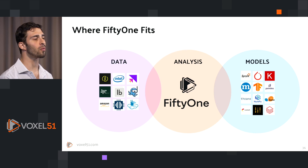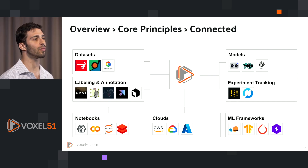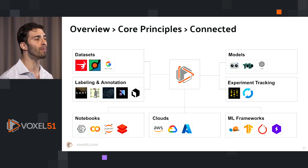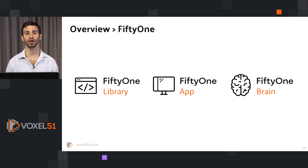Let's take a step back and talk about how FiftyOne fits into the larger data science, machine learning, and computer vision space. FiftyOne sits at the intersection of data and models — it helps you build higher quality datasets so that you can train higher quality models. You can bring your own data from any data provider and your own model from any model provider. FiftyOne is connected with the larger landscape of tools: data and labeling tools, notebooks, cloud providers, experiment tracking, and even vector search tools, serving as the source of truth for your data.